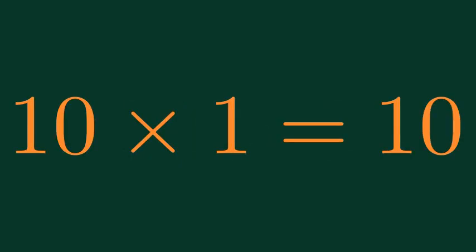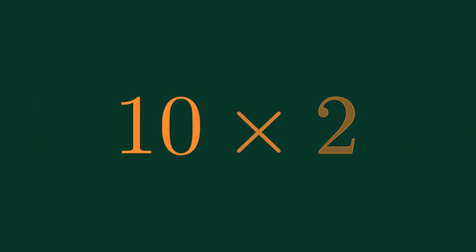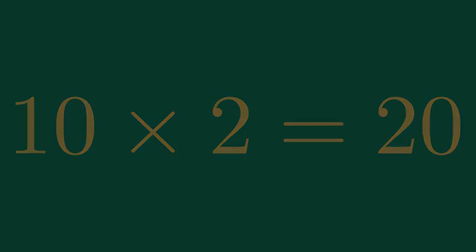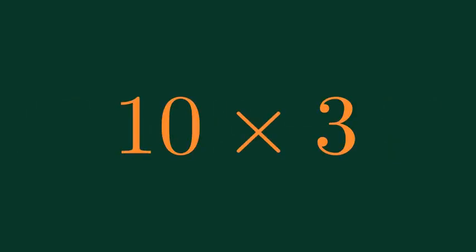10 times 0 is equal to 0. 10 times 1 is equal to 0. 10 times 1 is equal to 0. 10 times 2 is equal to 0. 10 times 2 is equal to 0.